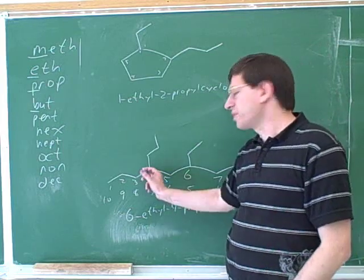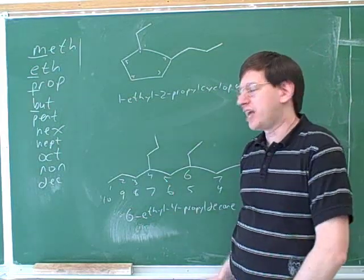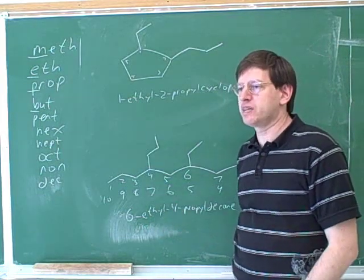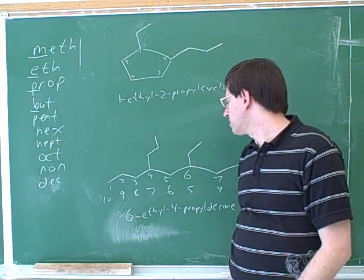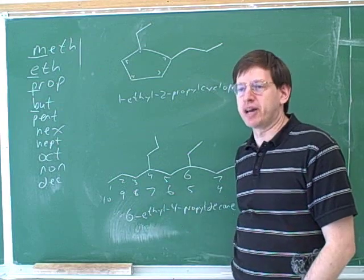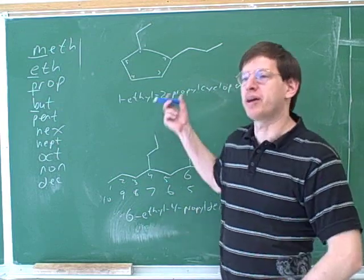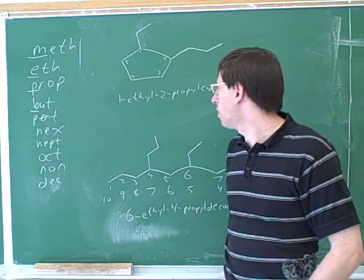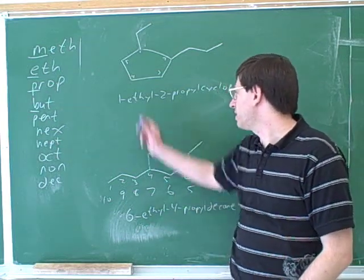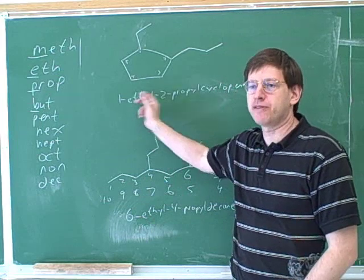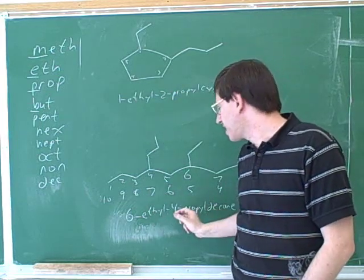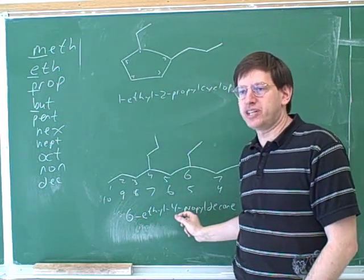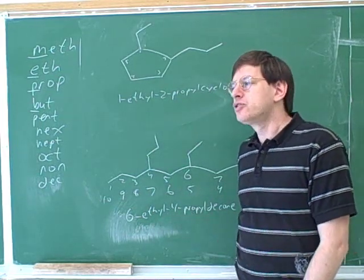We started the numbering from the left because that gives us the lowest possible number. But you always list the substituents in alphabetical order — we didn't talk about that much before, but you always list the substituents in alphabetical order. We did that up here: first ethyl, then propyl.